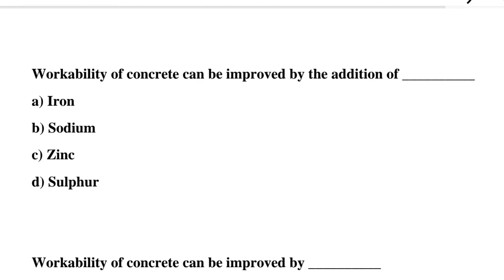So the first question: workability of concrete can be improved by the addition of — option A: iron, option B: sodium, option C: zinc, option D: sulfur. So the correct answer is option C, zinc.